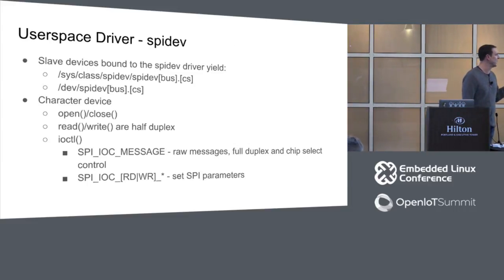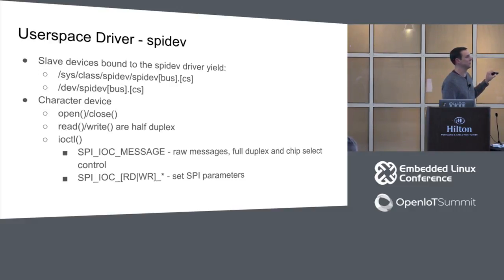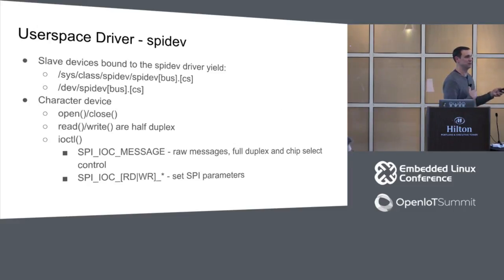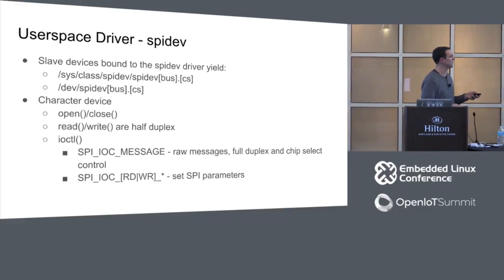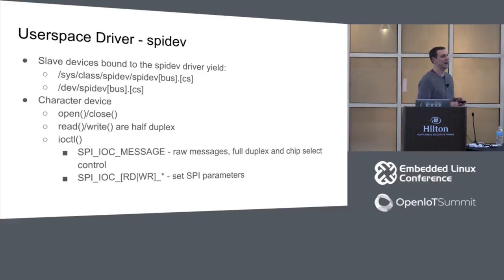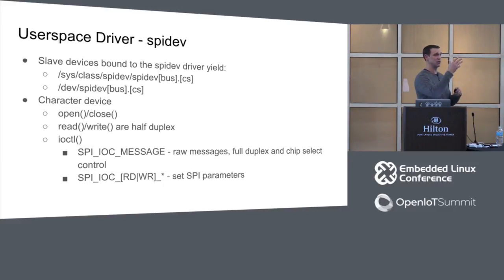Many times you don't want to do a half-duplex transfer — a lot of devices you're reading something back simultaneously. So you'll need to go to the ioctl interface. The options there map exactly to the same kernel APIs: you can define your buffers for full-duplex, filling a receive and having that transmit buffer sent. You can also define your chip select control and set delays. You can do all of that through spidev here.